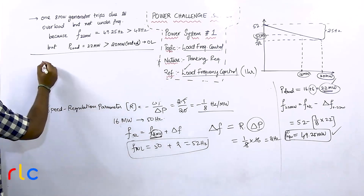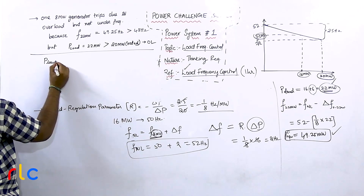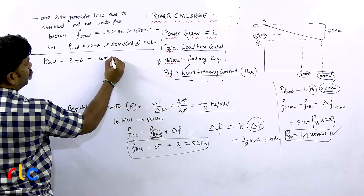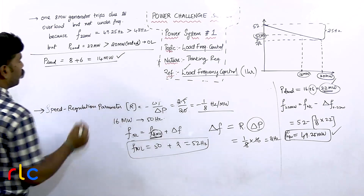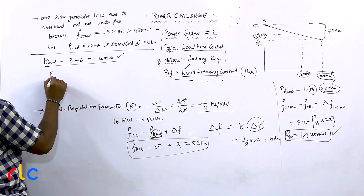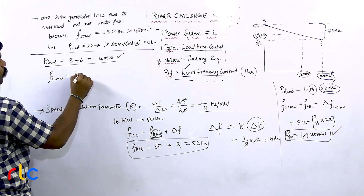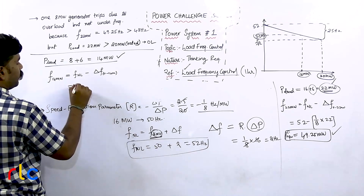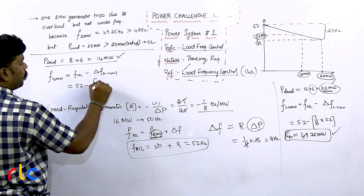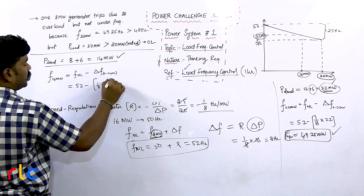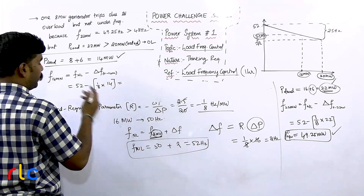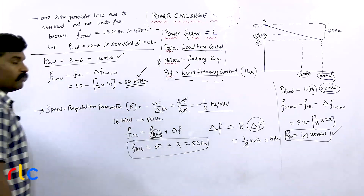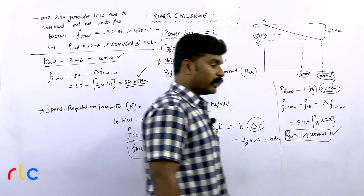If one 8 megawatt generator is tripped, the remaining load will be 8 + 6 = 14 megawatt. Frequency at 14 megawatt = no-load frequency − (regulation parameter × load) = 52 − (1/8 × 14) = 52 − 1.75 = 50.25 hertz. So the answer for this question is 50.25 hertz.